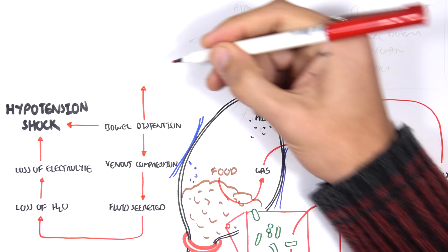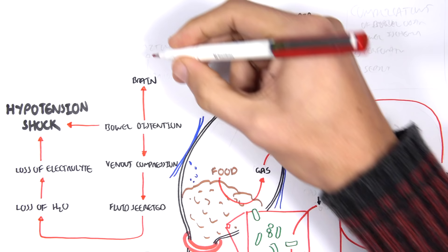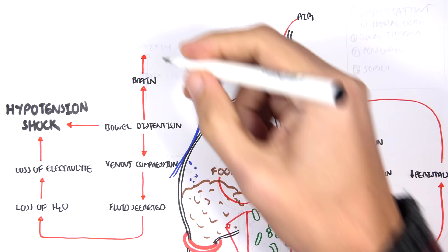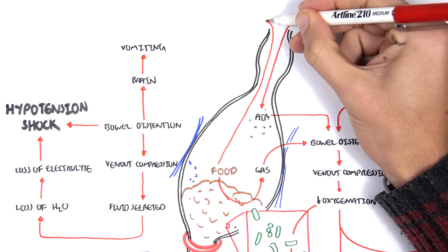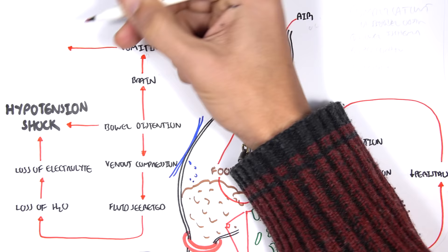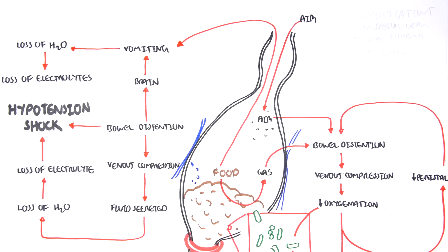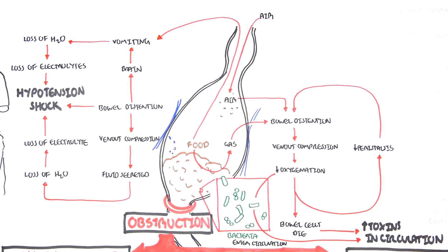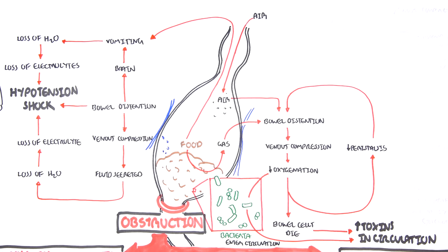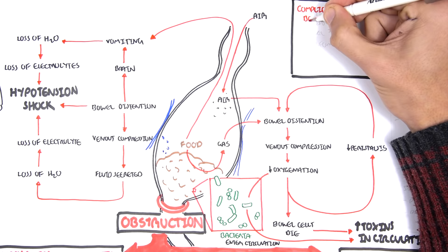Distension of the bowel triggers nerves which send signals up to the brain, triggering the vomiting response because the brain detects something is wrong and wants to expel it. However, vomiting doesn't help because when we vomit we lose water and electrolytes, which results in hypotension again. We get hypovolemic shock. So shock can result from hypotension or from sepsis when bacteria enter circulation.